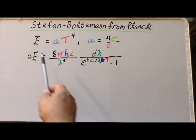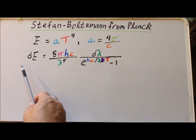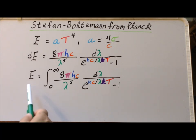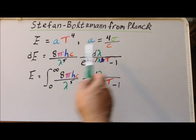To solve for the Stefan-Boltzmann law, we are going to take each side of this relationship and integrate λ from 0 to infinity. Essentially, we're integrating over all possible wavelengths. So this gives us that E, the total emissivity, is the integral from 0 to infinity of this expression.